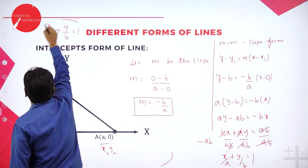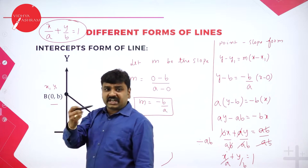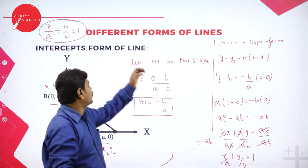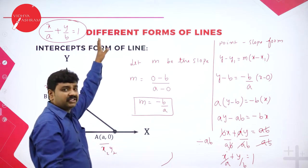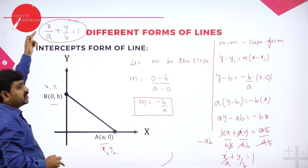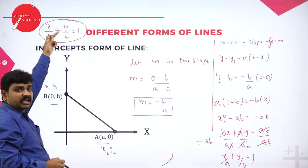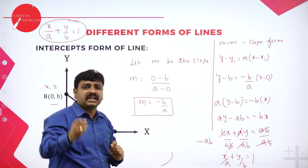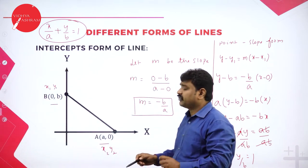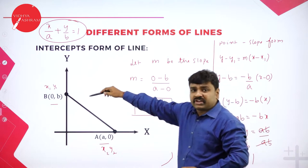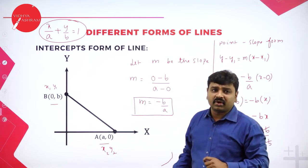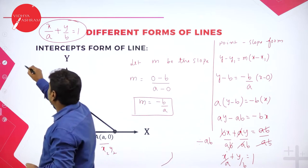x by a plus y by b equal to 1 is the intercepts form of a line. Memorize this — and in your second year you will see the intercept form of a plane where you will get an extra term z by c. So memorize: what is the intercept form of line? x by a plus y by b equal to 1. By now we have learned three forms.